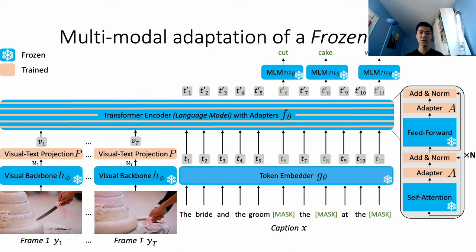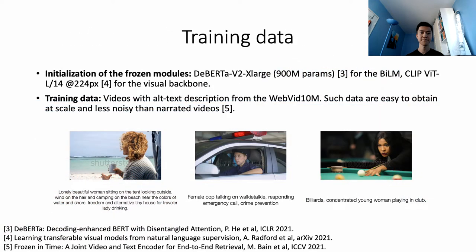The trained parameters include the newly initialized modules, together with the layer normalization modules, making up less than 5% of the original language model weights. We train these parameters on web-scraped videos paired with alt text descriptions from the WebVid-10M dataset. We use a simple visually-conditioned masked language modeling objective. Our FrozenBiLM model uses a 900 million parameter DeBERTa v2 X-Large as the frozen language model, and a CLIP ViT-L/14 at 224 pixels as the frozen visual backbone.